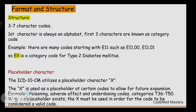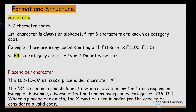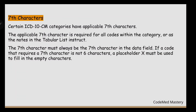Next is the placeholder character. ICD-10-CM utilizes a placeholder character X. The X is used as a placeholder at certain codes to allow for future expansion. For example, in poisoning, adverse effect, and underdosing codes — categories T36 to T50 — where a placeholder exists, the X must be used in order for the code to be considered valid. The character X is used as a placeholder for future expansion.